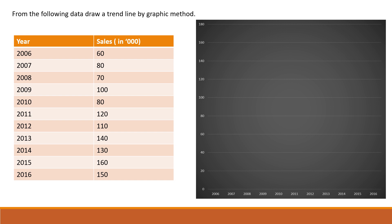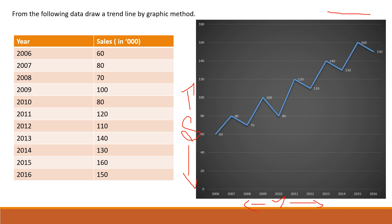While doing the graph, we have to write the scale, heading, and what the x-axis and y-axis represent. The scale is: for the x-axis, 1 cm equals 1 year; and for the y-axis, 1 cm equals 20,000 rupees. The x-axis represents year and the y-axis represents sales. Then we have to plot the values — there are a total of 11 values, all plotted on the graph according to the scale. Now we have to draw a trend line.